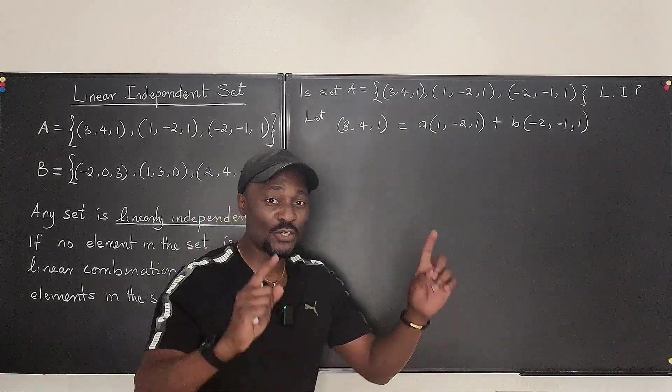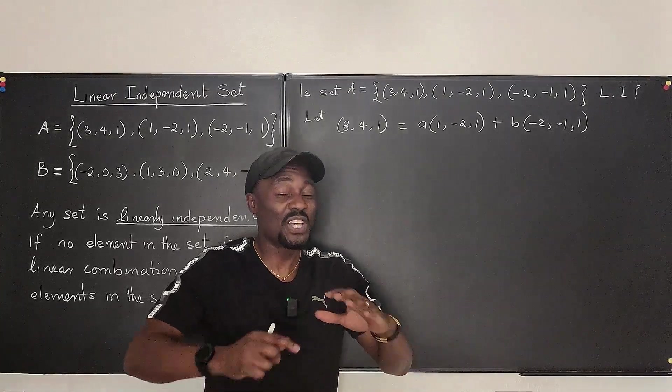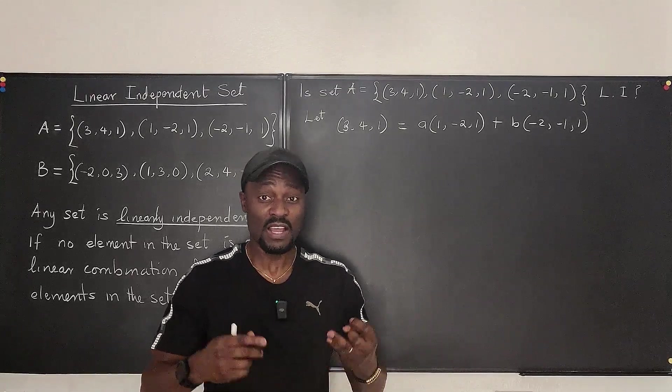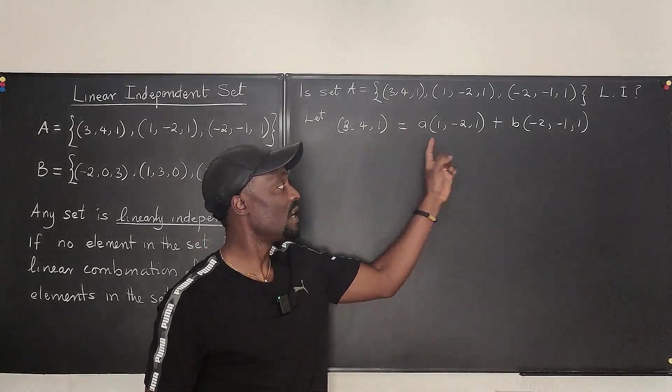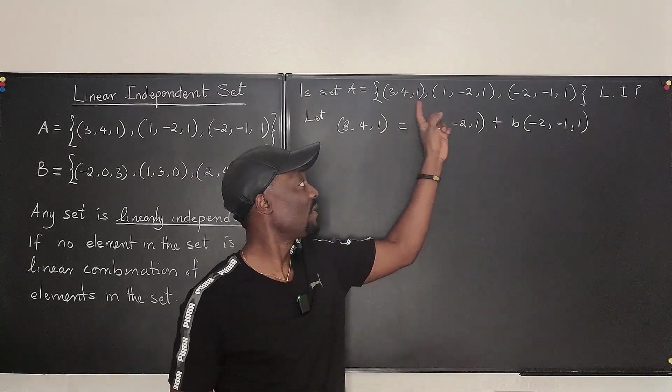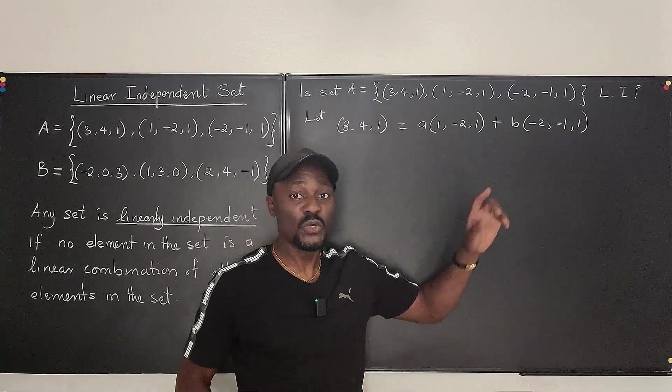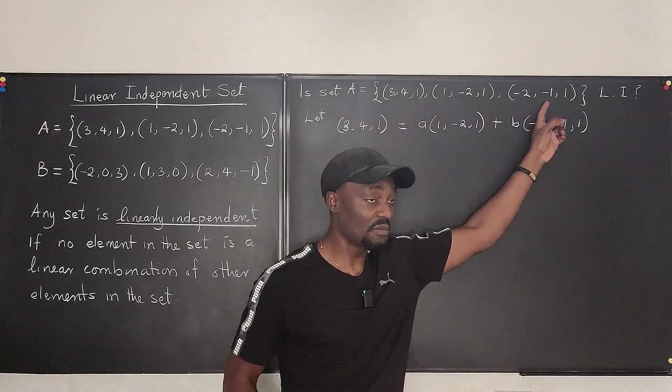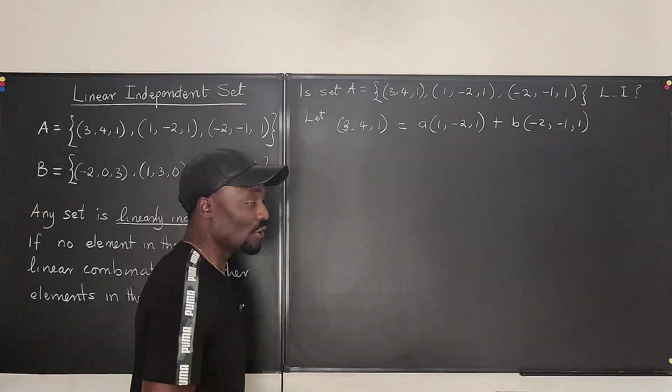I just need to know whether A and B exist. If you can find A and find B as scalars, then it means it's a linear combination of these two, and therefore this set is linearly dependent. But if A and B do not exist, it means that this is not a linear combination of these two, and therefore the set is linearly independent.